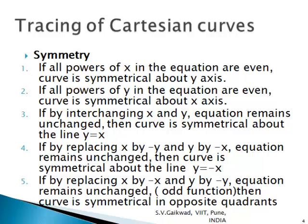When tracing Cartesian curves, we study these properties: symmetry, passing through origin, tangents at origin, intercepts, tangents at intercepts, asymptotes, region of absence, and variation at infinity. For symmetry: if all powers of x in the equation are even, the curve is symmetrical about the y-axis. If all powers of y are even, symmetry about the x-axis. If interchanging x and y leaves the equation unchanged, the curve is symmetrical about the line y = x.